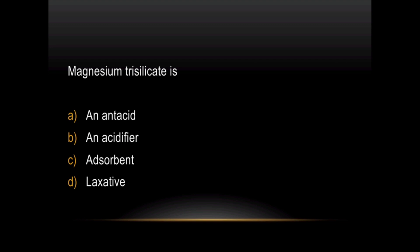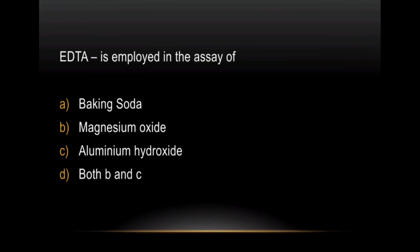Question 7: Magnesium Trisilicate — what category of drug is it? Very easy and straight question: it is an Antacid. Question 8: EDTA is employed in the assay of what? EDTA is used in the assay of Magnesium Oxide, Aluminium Hydroxide — both B and C. The right answer is both B and C.